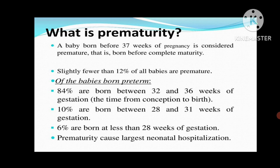10% are born between 28 and 31 weeks of gestation, and 6% are born at less than 28 weeks of gestation. Prematurity causes the largest number of neonatal hospitalizations — it is the biggest reason neonates get hospitalized.